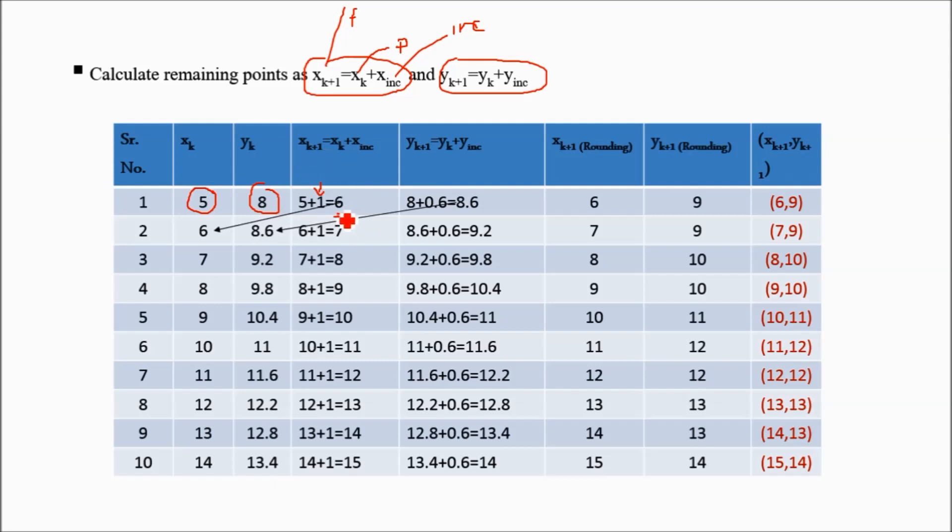x of k plus 1 becomes 6. y of k plus 1 equals 8 as y of k plus increment 0.6, which equals 8.6. As the pixel value is integer, the fraction should be rounded to nearest integer. It is greater than 0.5, so it is rounded to 9. Now for further calculation, we have to take the 6 as x of k plus 1 and the fraction value for the calculation, not the integer value. Addition will be 6 plus 1 is 7 and 8.6 plus 0.6 is 9.2, rounded to 9.